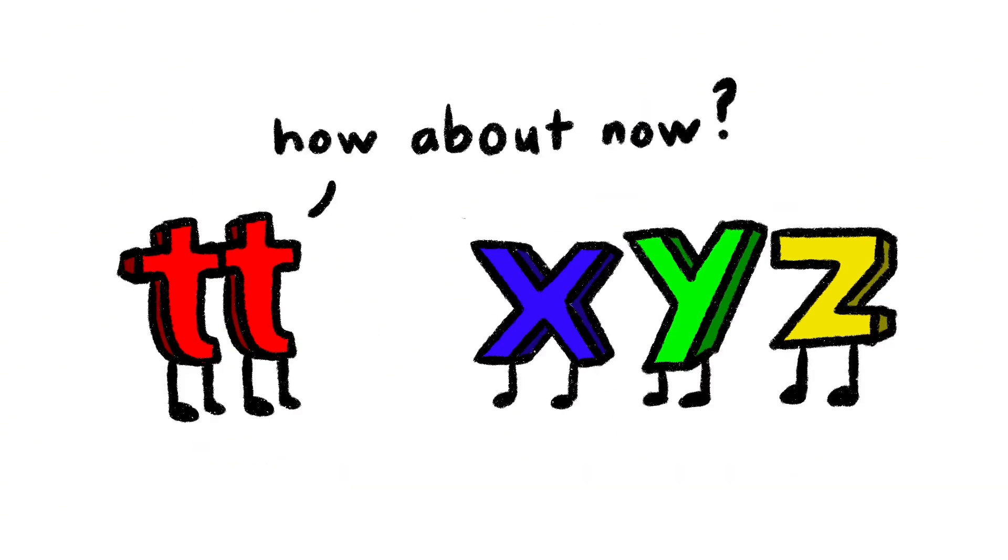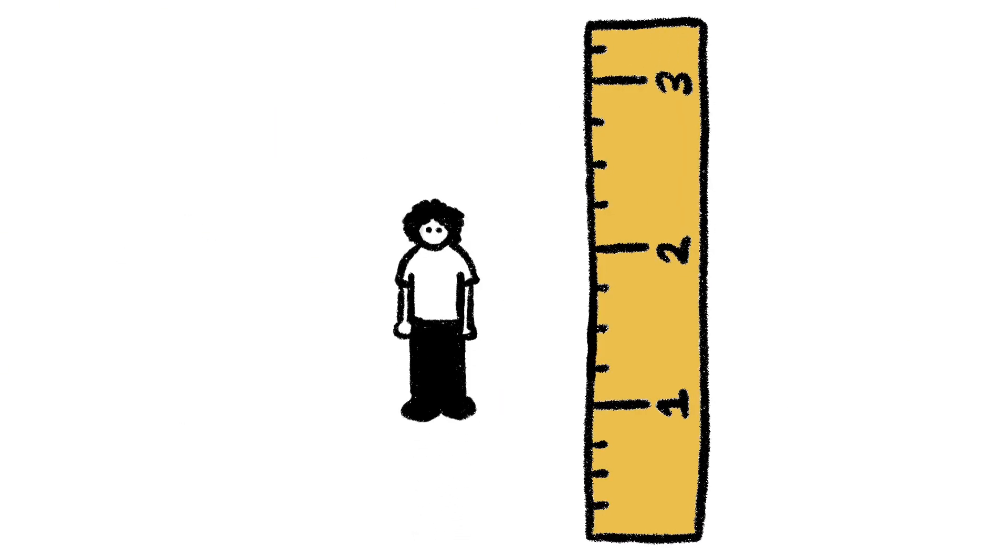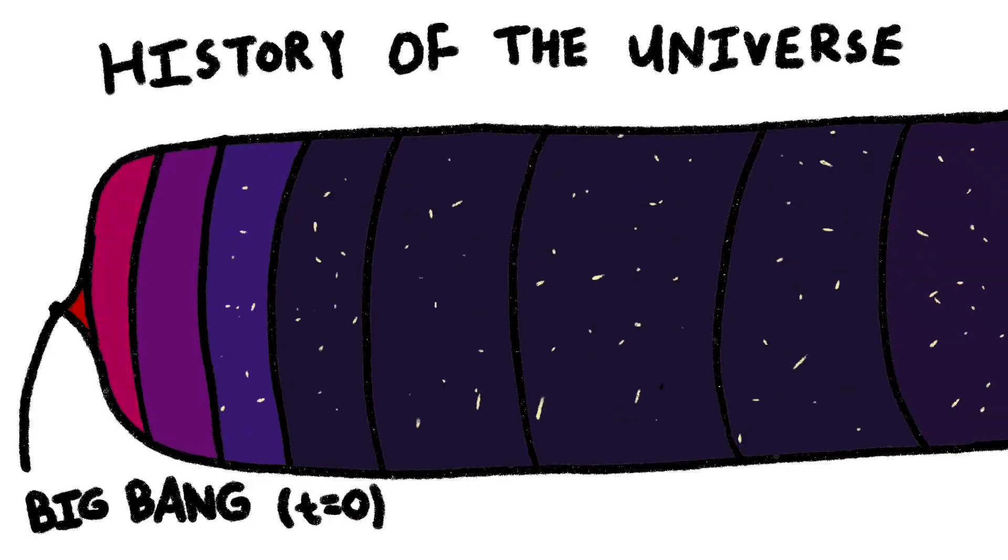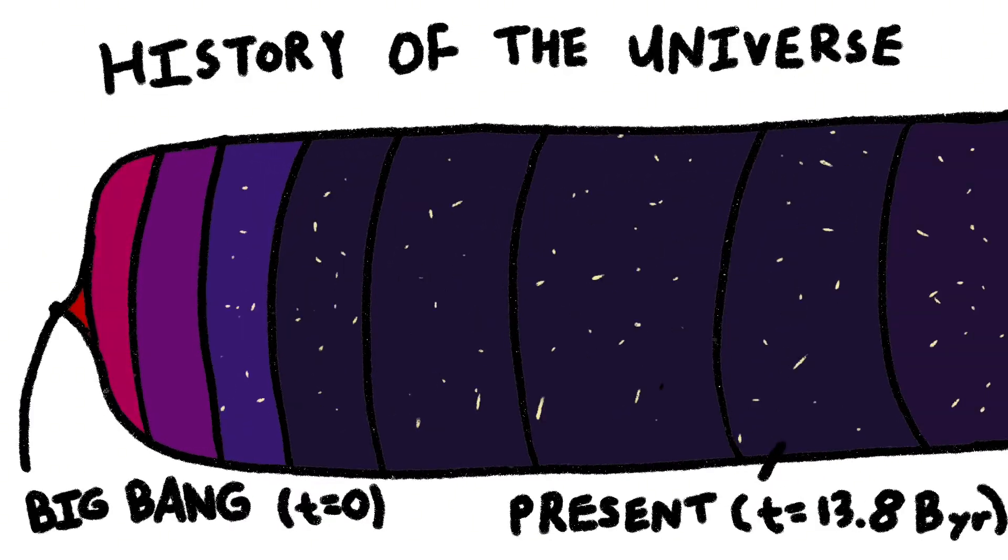Because of this preferred direction, some people refer to time as a half dimension. Unlike space, which appears to have no preferred direction and no preferred origin, time, at least according to our current theories, began at the Big Bang and has only moved towards the future since then.